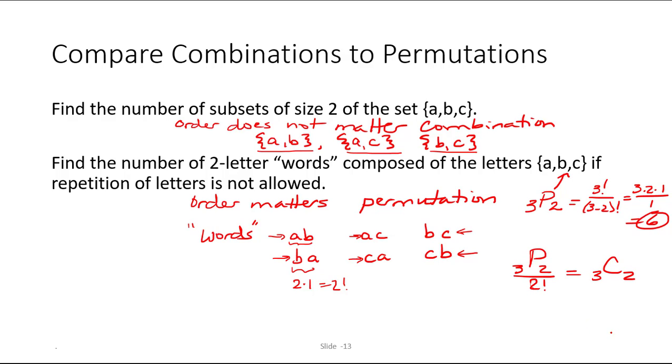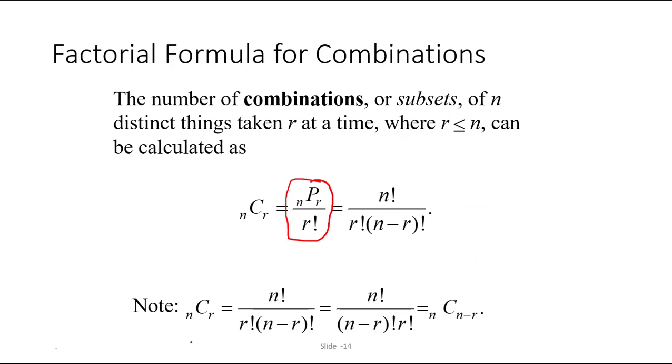This gave us 3C2. And this holds true in general, meaning that if you want to calculate nCr, you can take nPr and divide it by r factorial. So the formula for nCr is obtained by dividing nPr by r factorial, and it ends up looking like this: n factorial divided by r factorial times n minus r factorial.